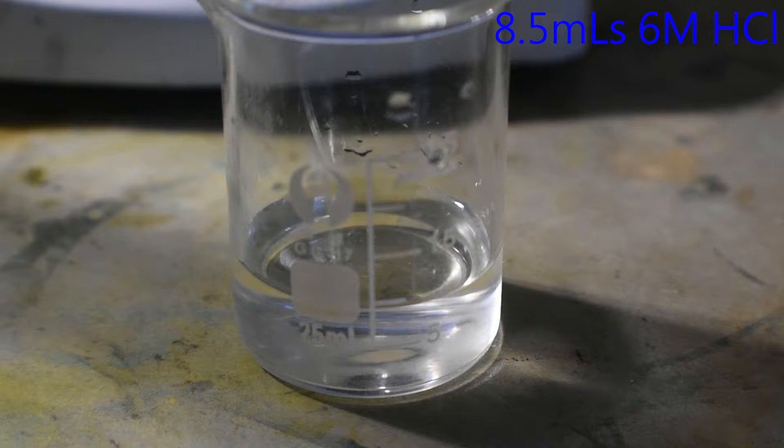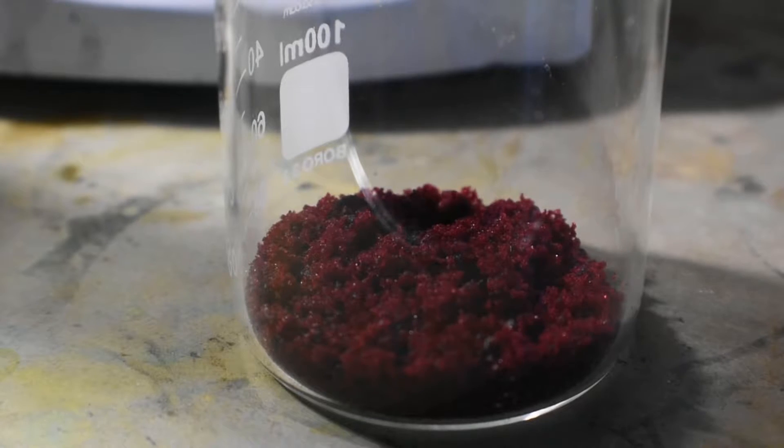Next, we're going to need 8.5 milliliters of 6 molar hydrochloric acid. Next, we're going to need 12 grams of cobalt(II) chloride hexahydrate. This will be dissolved in 35 milliliters of room temperature distilled water.